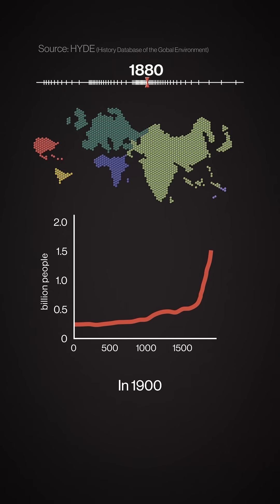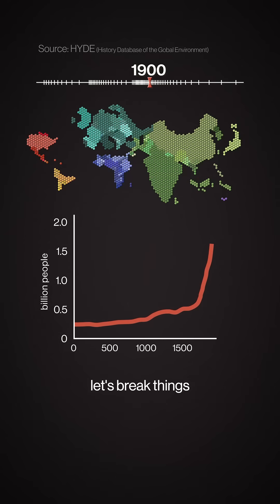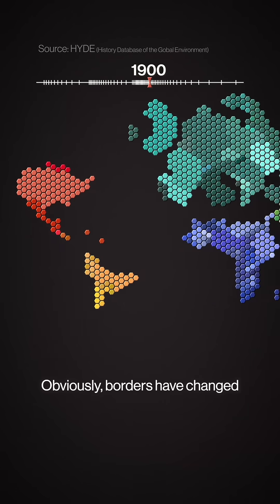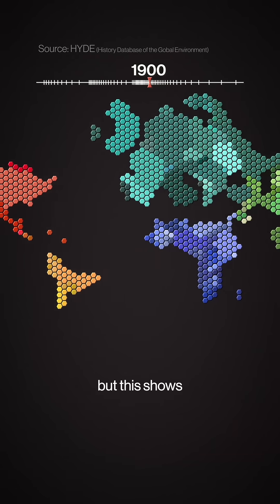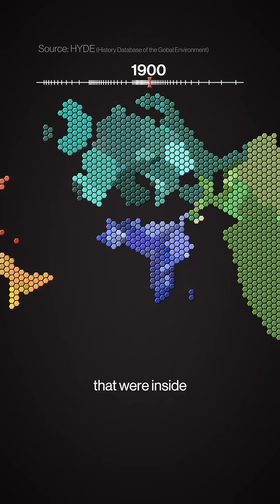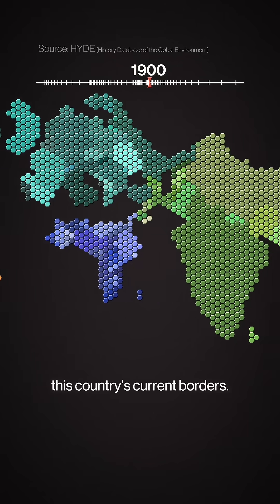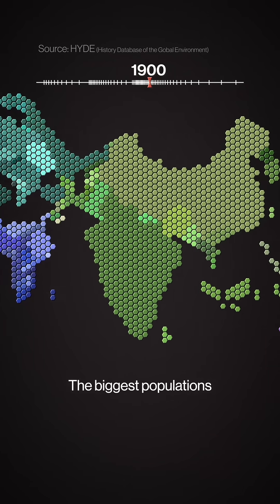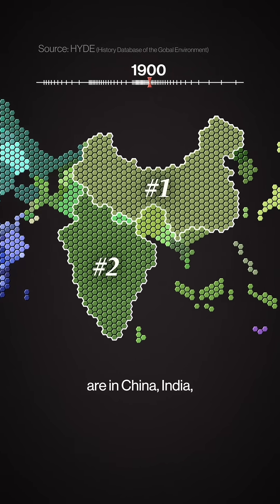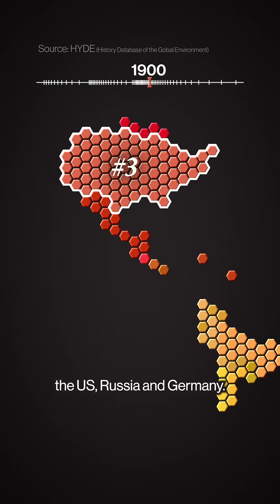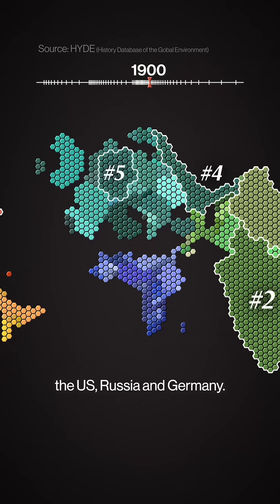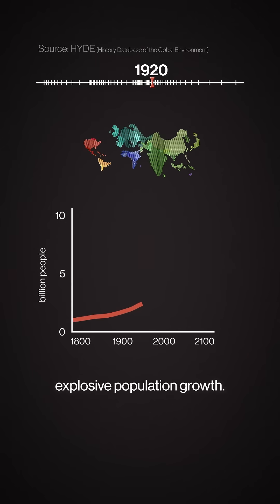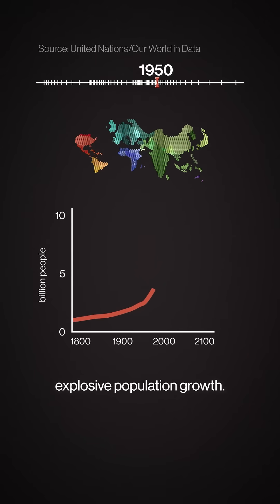At 1900, let's break things down by country. Obviously borders have changed since then, but this shows the number of people that were inside each country's current borders. The biggest populations are in China, India, the US, Russia, and Germany.